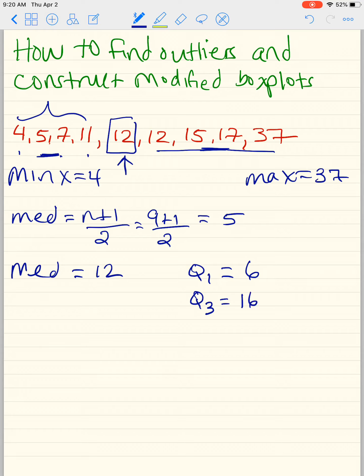So now that we have Q1 and Q3, we're going to start the formula. The first step is to find the IQR. The IQR is Q3 minus Q1, and it stands for interquartile range. That's just going to be 16 minus 6, which is 10. We're going to take that number, and we're going to multiply it by 1.5. 10 times 1.5 is just 15.